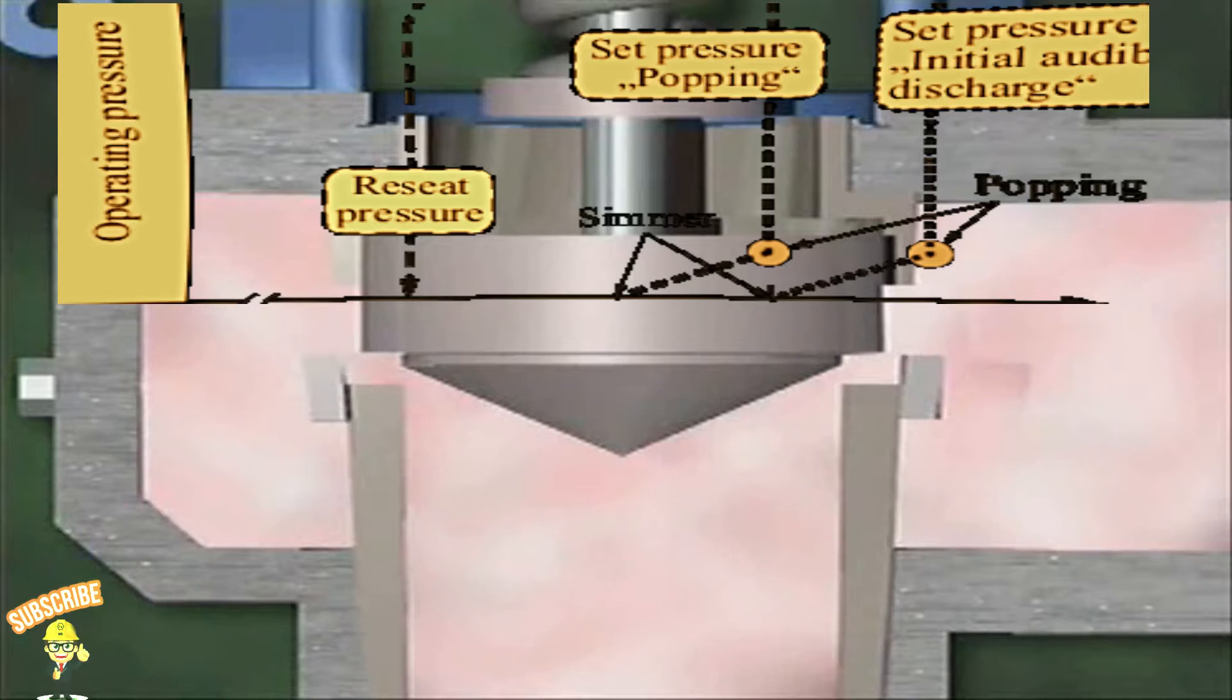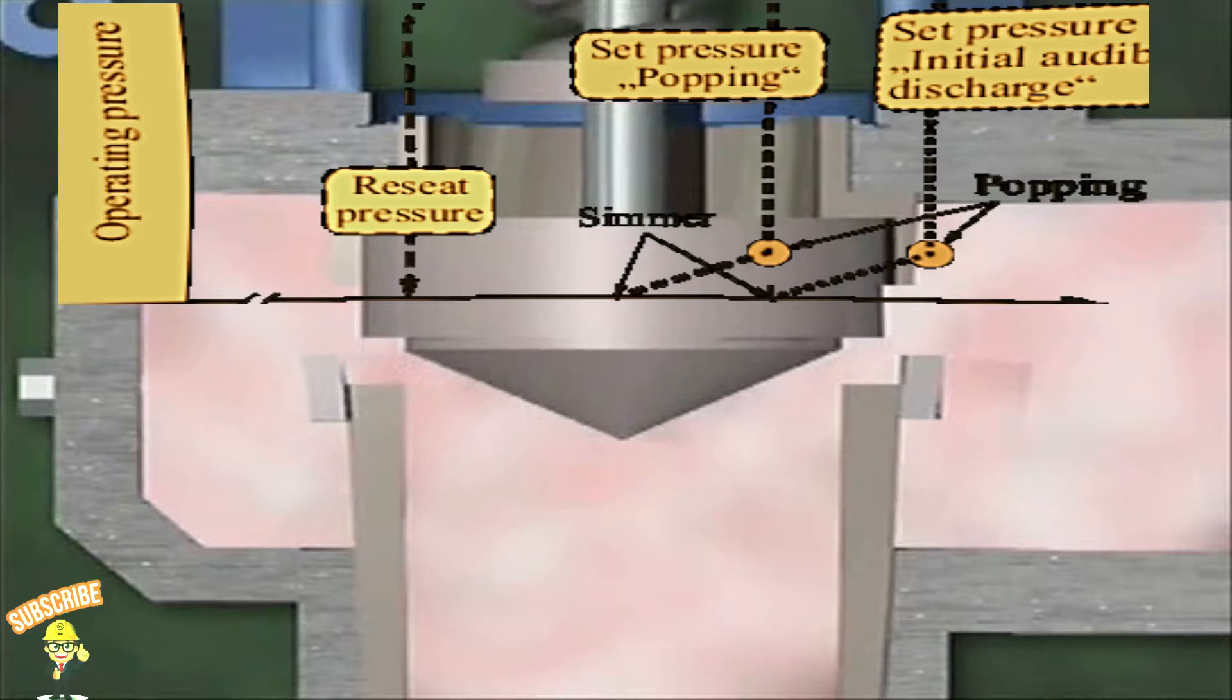If the pressure in the system continues to increase, the velocity of the escaping fluid will also increase, causing the disc to gradually lift higher until it reaches the fully open position. Since the initial opening of the safety valve is about 60%, a large volume of fluid is allowed to escape quickly.